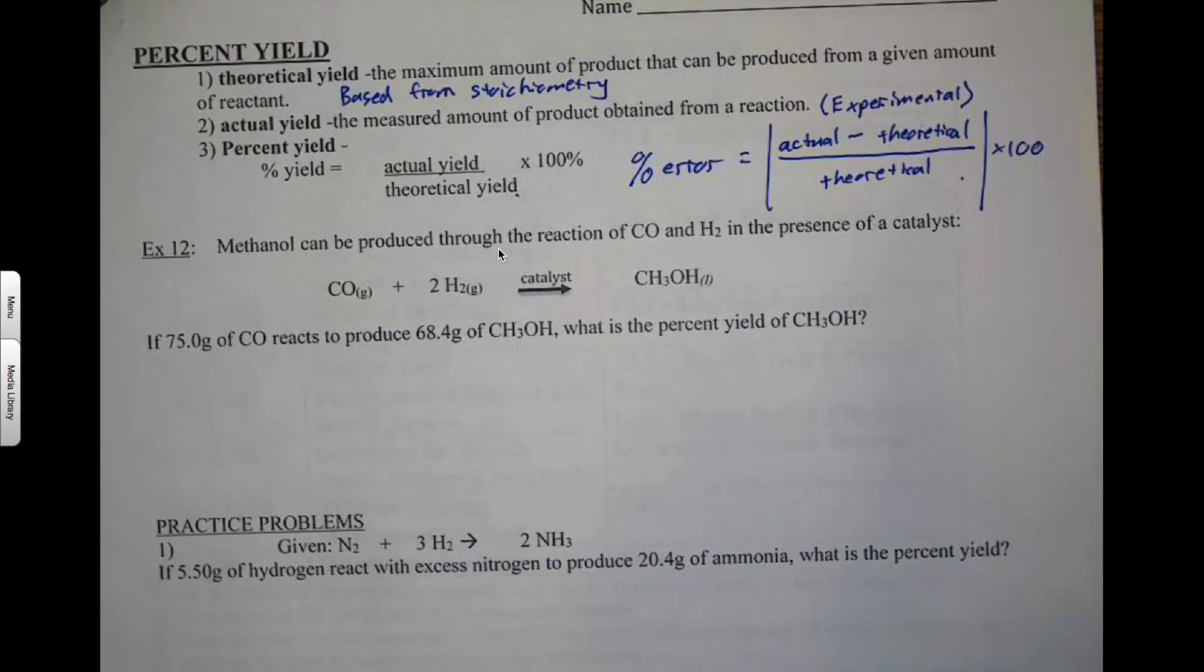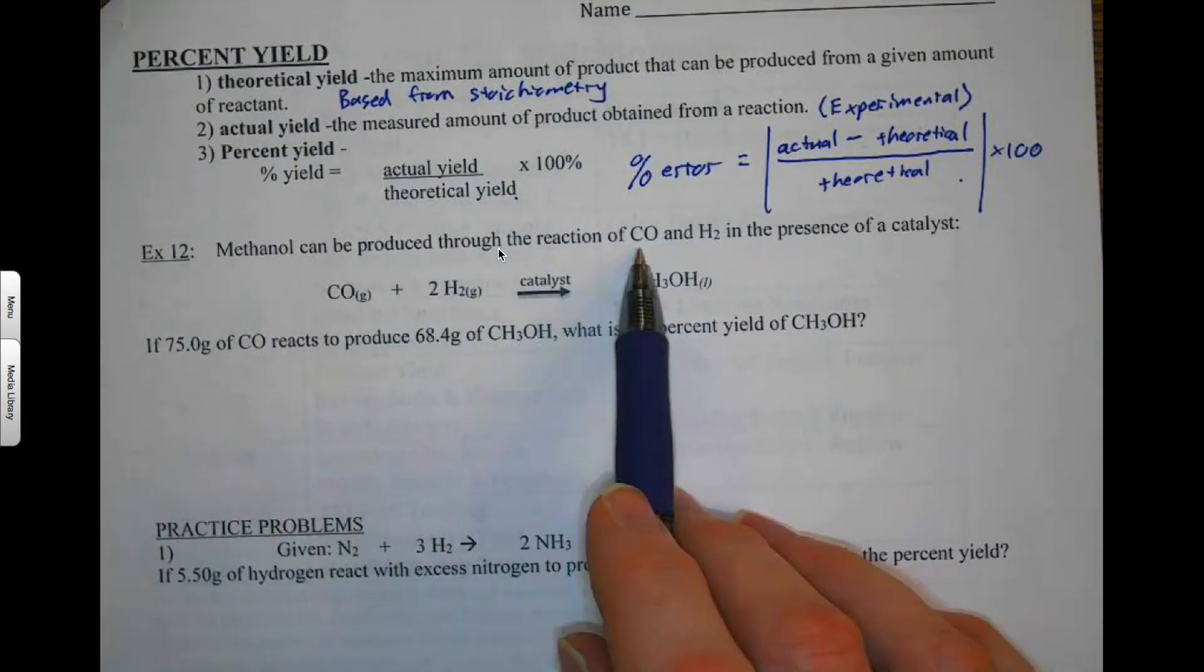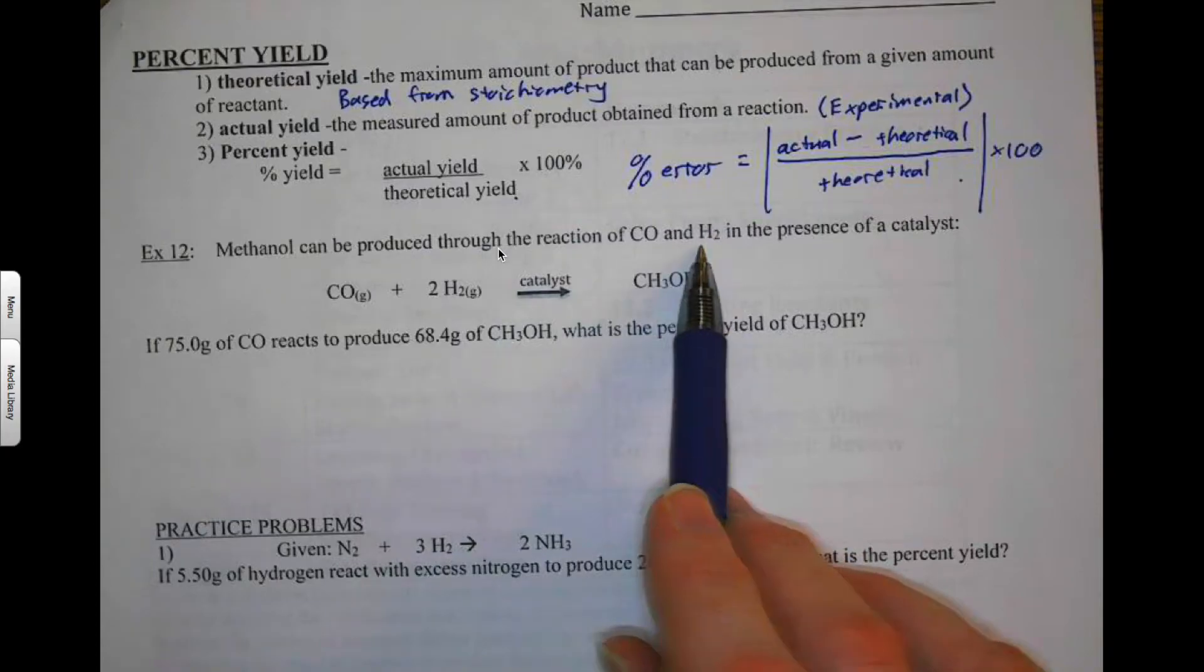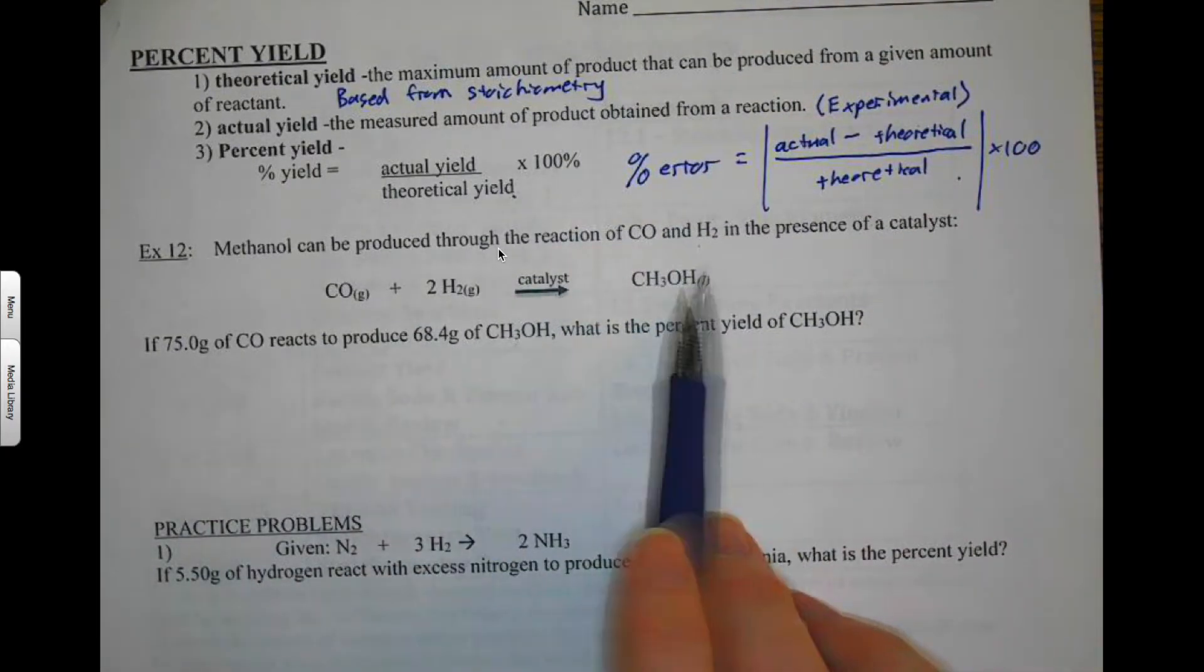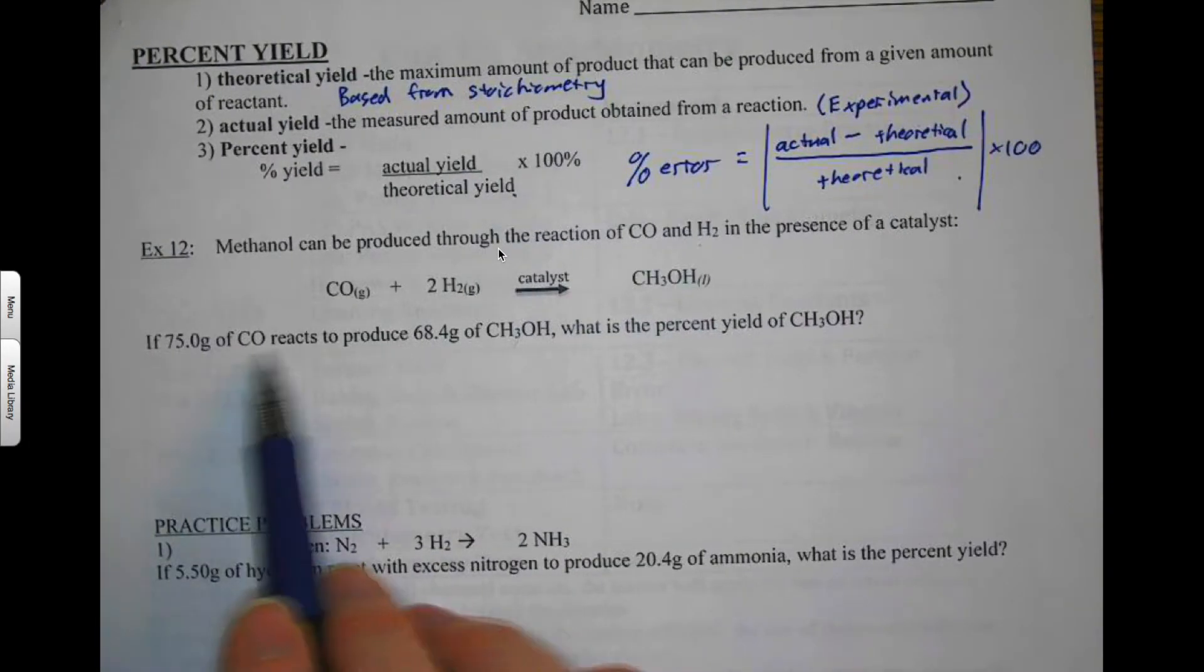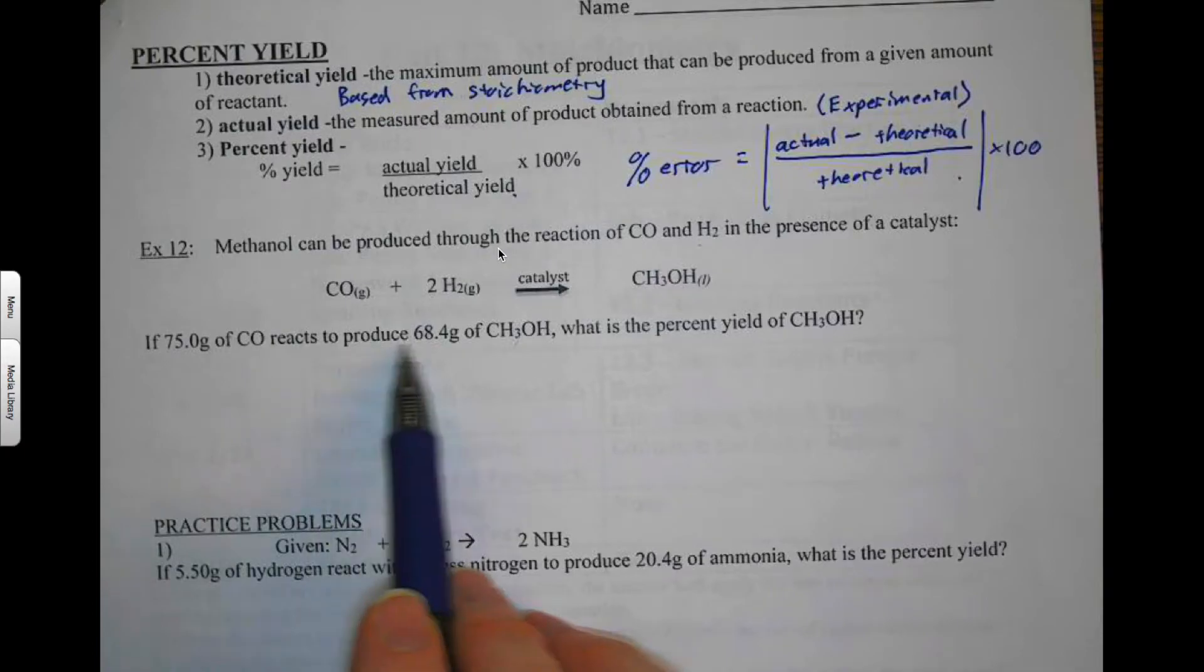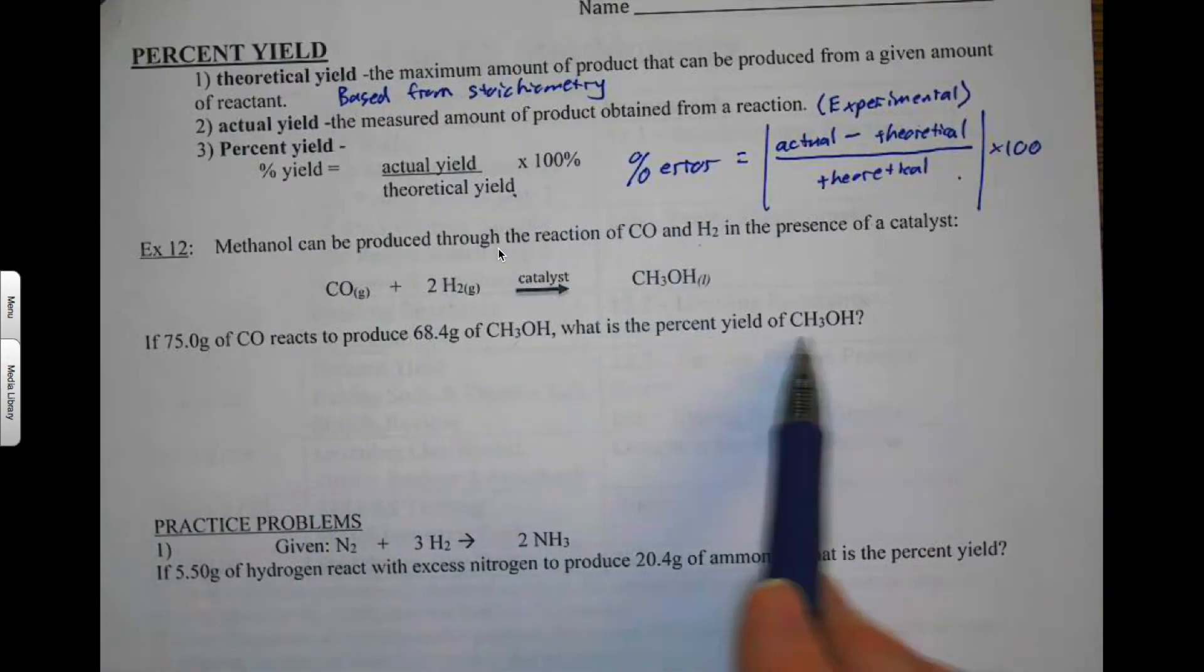So let's just try an example. Methanol can be produced from the reaction of CO, carbon monoxide, and hydrogen gas in the presence of a catalyst. Here we go. And we make methanol. If 75 grams of CO, carbon monoxide, reacts to produce 68.4 grams of methanol, what is the percent yield? Okay.